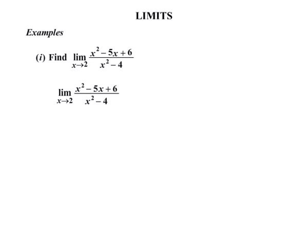So we rewrite the question. The idea with limits is to see what happens as x approaches 2. Now the reason we can't just put x equals 2 straight in — if we try, we wouldn't have a problem on the top, but on the bottom, 2 squared is 4, and 4 minus 4 is 0, so we'd be dividing by 0. So there's a problem there.